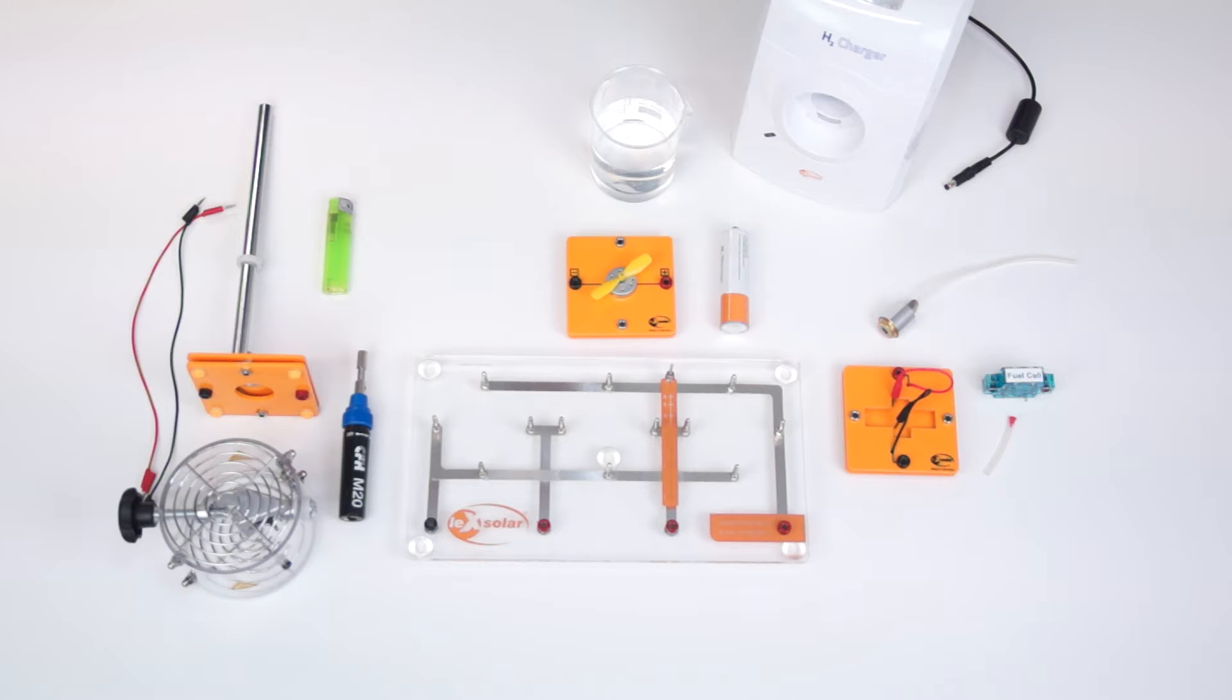For the experiment with the PEM fuel cell we need hydrogen. We produce this with the H2 charger. To this end we first fill distilled water into the water tank.